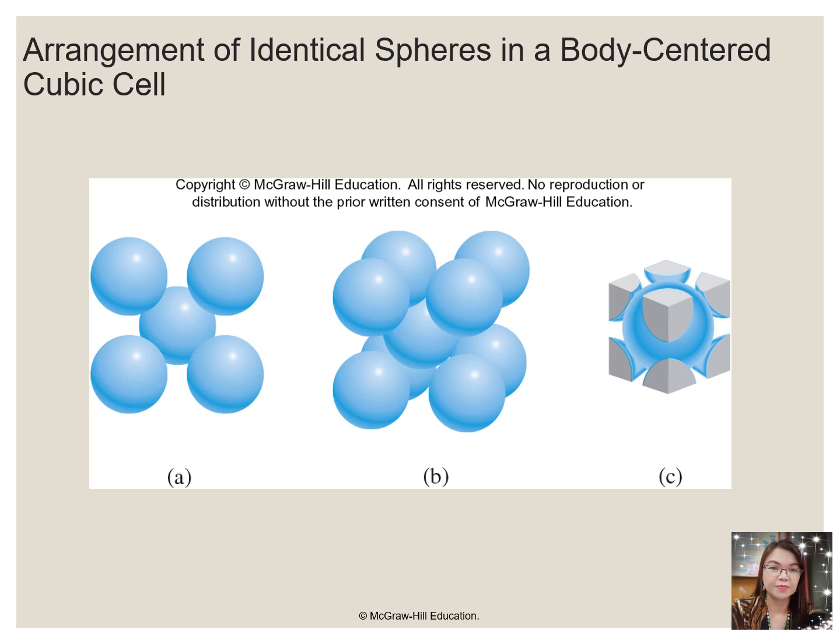The body-centered cubic unit cell is a more efficient way to pack spheres together and is much more common among pure elements. Each atom has eight nearest neighbors in the unit cell. As shown in the figure, the body-centered cubic structure consists of a single layer of spheres in contact with each other and aligned so that their centers are at the centers of the square. A second layer of spheres occupies the square-shaped holes above the spheres in the first layer. The third layer of spheres occupy the square holes formed by the second layer, so that each lies directly above a sphere in the first layer, and so forth.